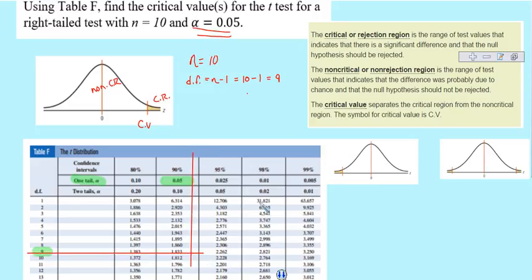And so at this point, we would see that our critical value for a sample size of 10, a degrees of freedom of 9, and a significant level of 0.05, or 5%, would be positive 1.833.